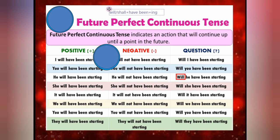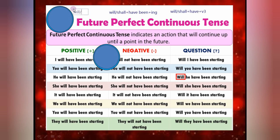Now let's recall all the forms. Future perfect continuous: will/shall plus have been plus ing. For future perfect tense: will/shall plus have plus verb third form. For future continuous: will/shall plus be plus ing. And for simple future tense: will/shall plus verb first form. You can see that will/shall is common everywhere. So these four are there — simple future, future continuous, future perfect, and future perfect continuous.